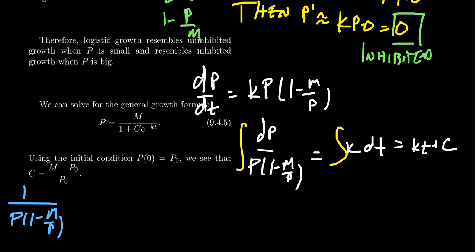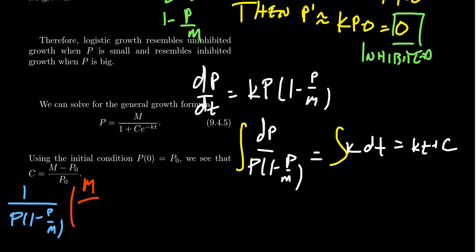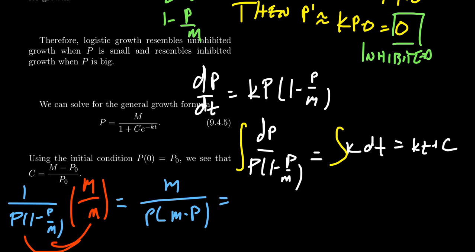We have one over p times one minus p over m. I don't really like fractions inside of fractions, so to clear the nested fractions we multiply the top and bottom by m. This gives us m over p times m minus p. We want to decompose this into partial fractions: A over p plus B over m minus p.